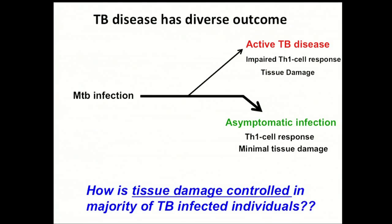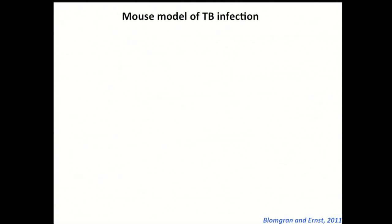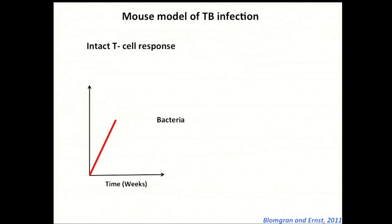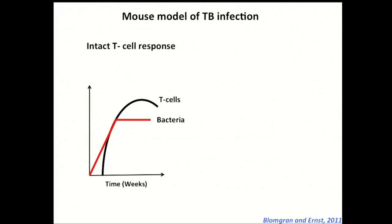The major question that still remains unanswered in the TB research field is how tissue damage is controlled during TB in the majority of asymptomatic or latently infected individuals. To understand that, we took advantage of the mouse model of TB infection. From the literature it's known that a mouse which can induce a potent T cell response, the bacteria grow uninhibited for the first three weeks. Once the adaptive immunity or T cell response kicks in, the bacterial number is maintained at a constant level, and in this situation the host survives without developing any tissue damage.